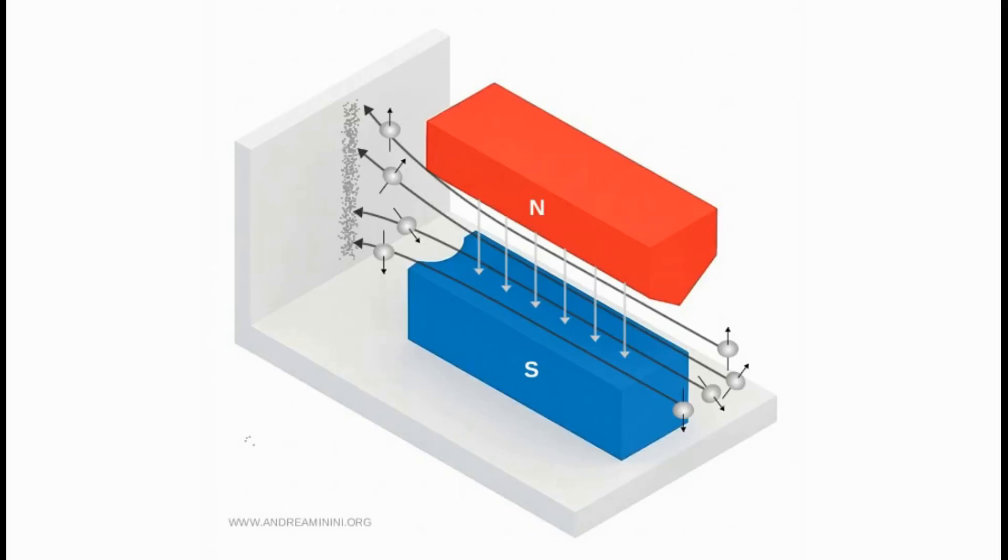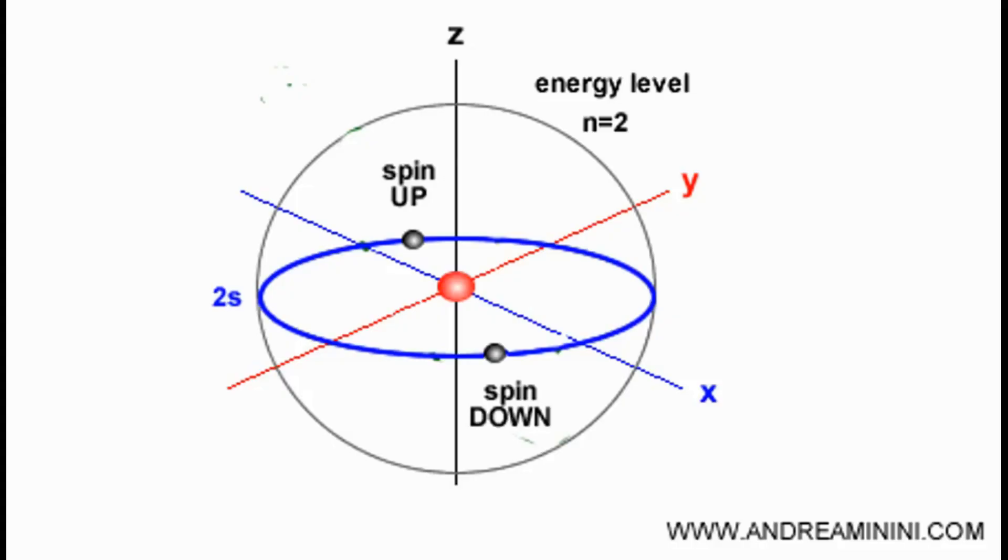But that's not what they saw. Instead, the beam split cleanly, distinctly, into just two points: up or down. Nothing in between. And that was it. That proved the property was strictly quantized—it could only have these two discrete values. Even Wolfgang Pauli called it a non-classically describable duality. He was basically saying, just accept it. This is a purely quantum thing.